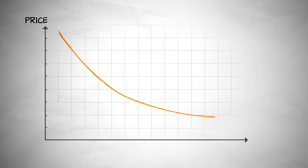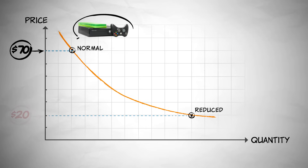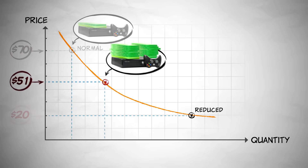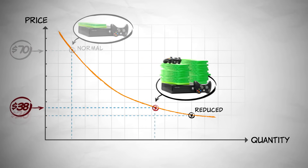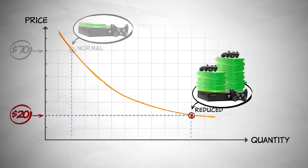Price is shown on the vertical axis and quantity is shown on the horizontal. Here's the normal price, and here's the Black Friday reduced price. Simply put, the quantity demanded increases as the price gets lower.